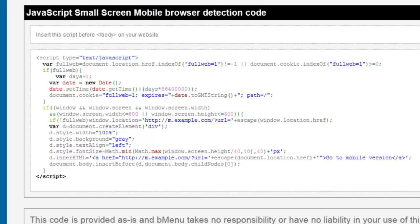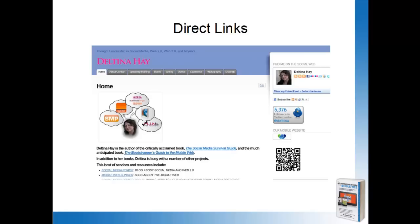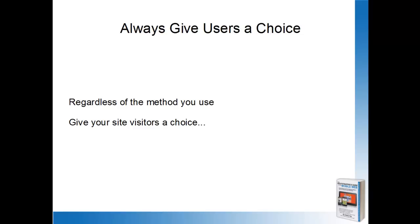Direct links are just exactly what they sound like — they're just direct links to your mobile website. You may not want to do any redirection at all and just give people an option to click something to go to your website. There are a couple of links: a graphical link, and a QR code that somebody can scan with a mobile device to go to the mobile version of the website. Regardless of the method you use, you always want to give your site visitors a choice.